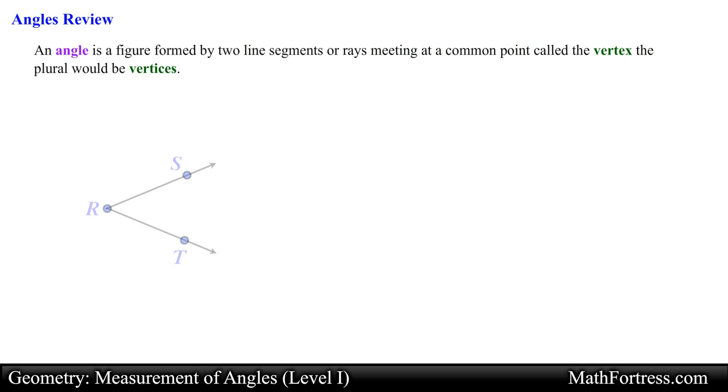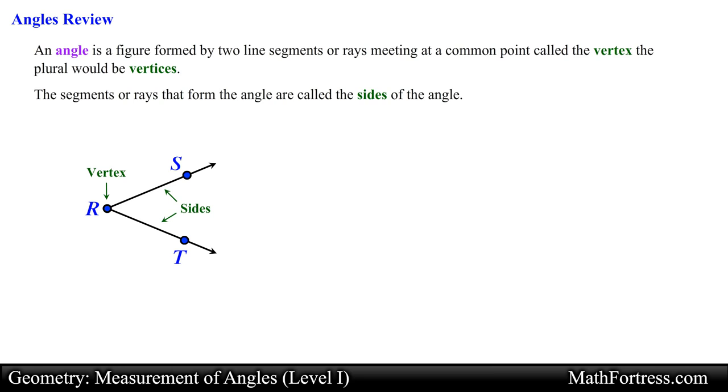In the previous videos we defined an angle as a figure formed by two line segments or rays meeting at a common point called the vertex, the plural would be vertices. The segments or rays that form the angle are called the sides of the angle.